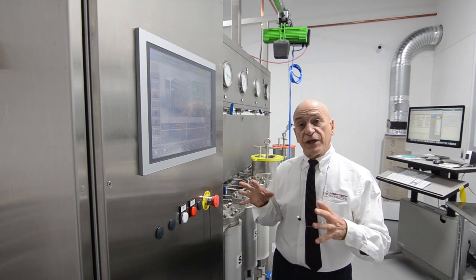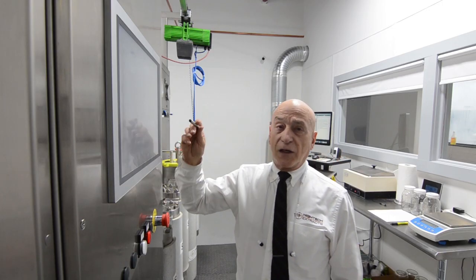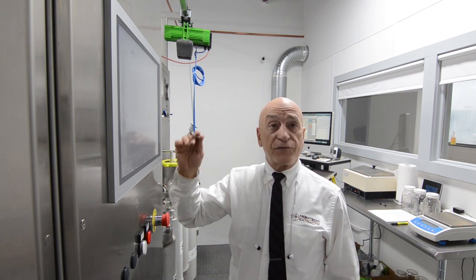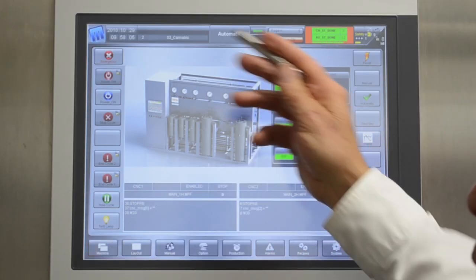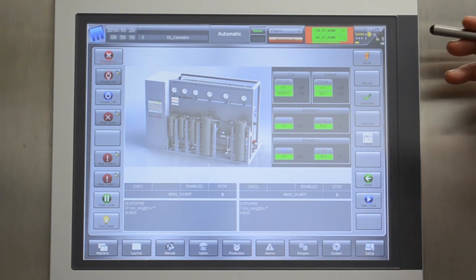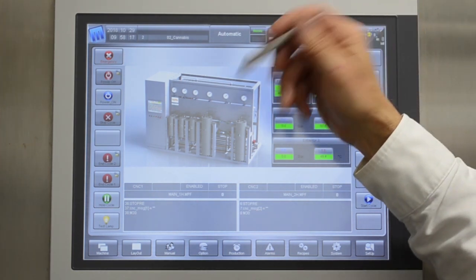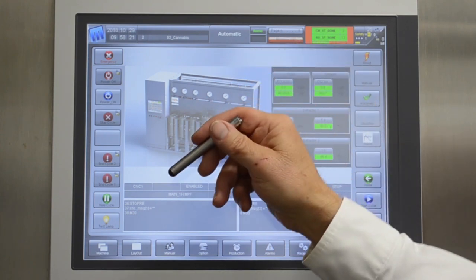It's helpful to have an understanding overall of the control system. The touchscreen display is what controls the system. It has a number of different pages with different functions. The machine page, which we're looking at right now, gives you a general overview of the machine. It's what you use to put it into manual or automatic mode, to power it on, power it off, do emergency stops, etc.